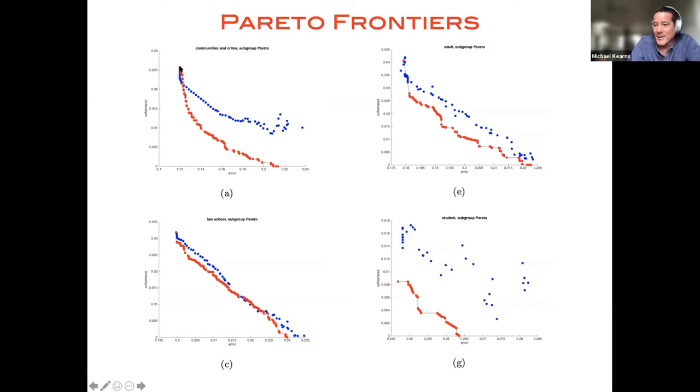here's one choice of model you have. This is basically the one where the fairness constraints are vacuous. So you have the smallest error on the x-axis, but the largest unfairness. At the other extreme, you can get to zero unfairness at the expense of much higher error. And in between, you have in between.